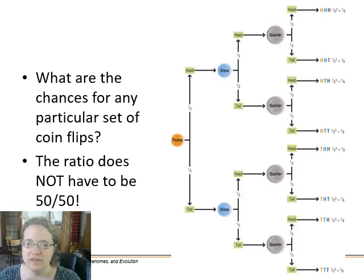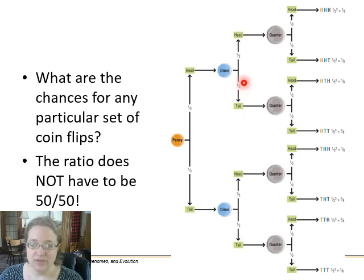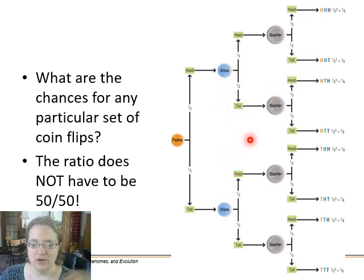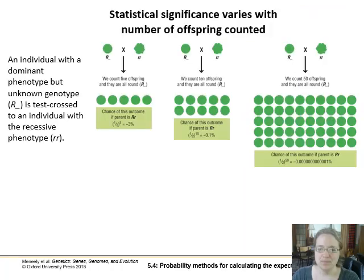Just like the Punnett square, the forked line method calculates the chances of any particular set of coin flips all happening at the same time. The ratios don't have to be 50/50 — it could be a three-to-one chance, or there could be more than two options with multiple alleles. Anything bigger than a two-by-two Punnett square is probably better handled with the forked line method, which we'll also practice in recitation.